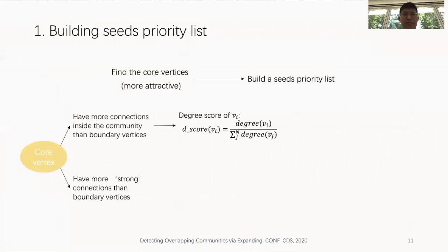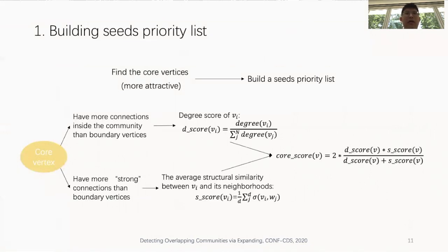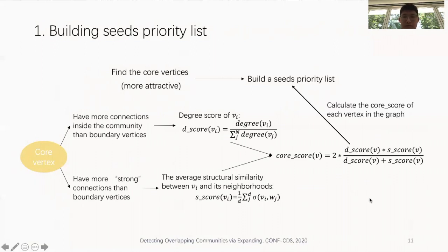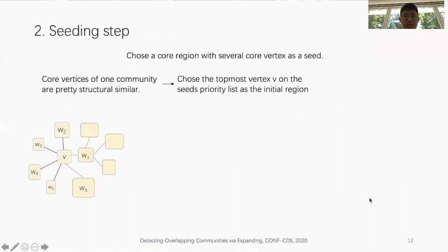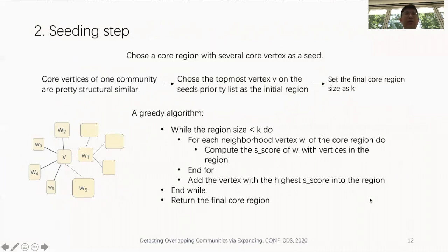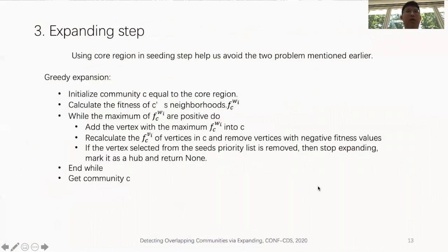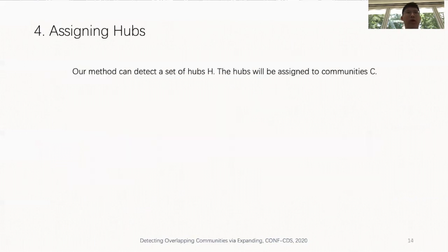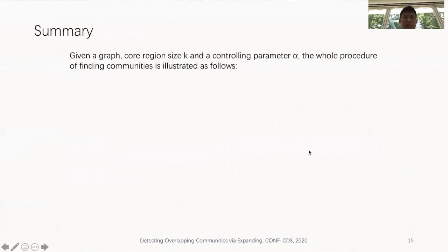Section 3a covers building the seed priority list, using the sigma(u,v) function mentioned previously. Section 3b is the seeding step. Section 3c is the expanding step. Last but not least, section 3d is the assigning step. Here is the summary of the whole process.